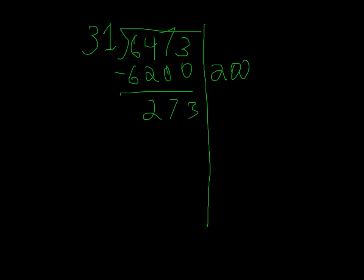Now we're going to do 31 times 5, and that equals 155. Now I know that 273 minus 155 equals 118.